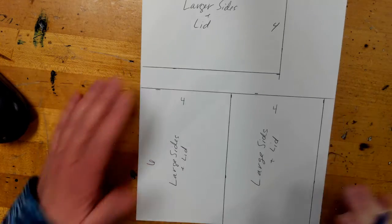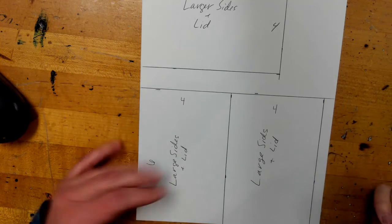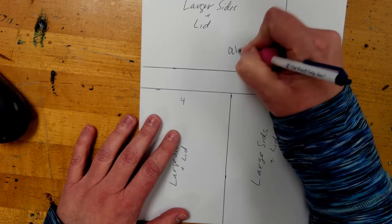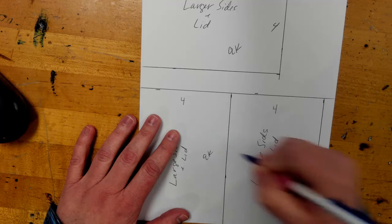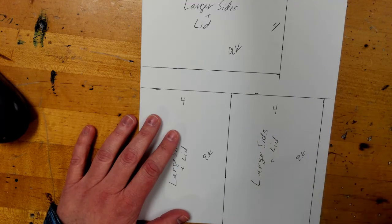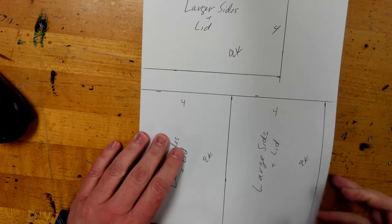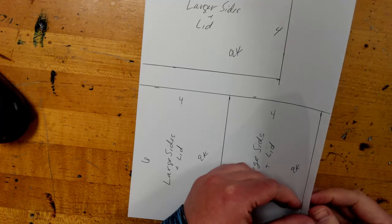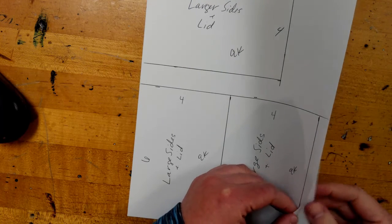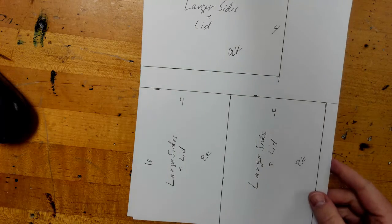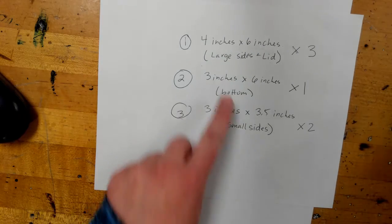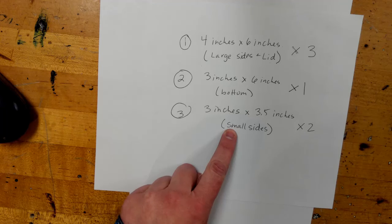Now, after you are done measuring, we will be cutting these out. So, please put your initials on each section, just in case they get lost, you know who they belong to. And then on the second piece of paper, you will be measuring out the other three rectangles that we need.